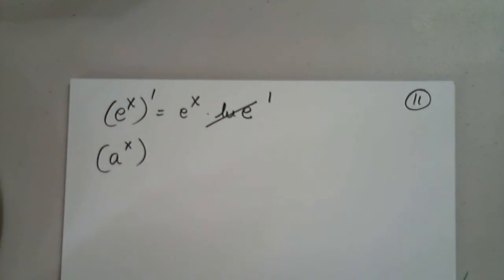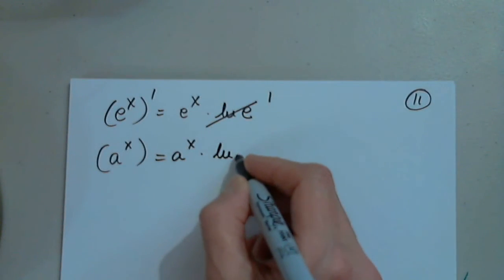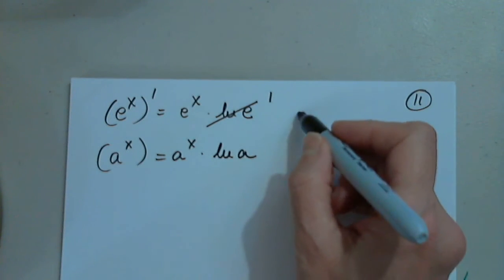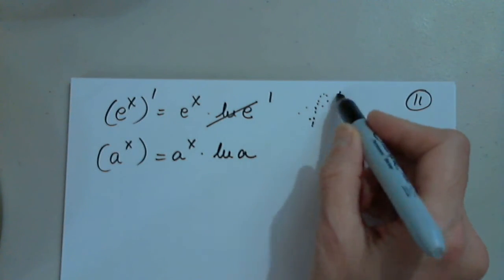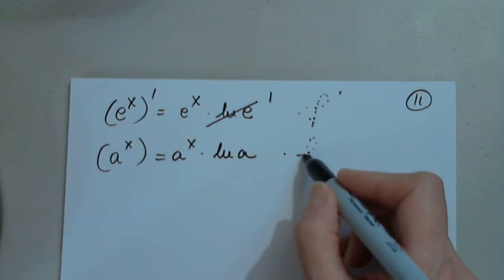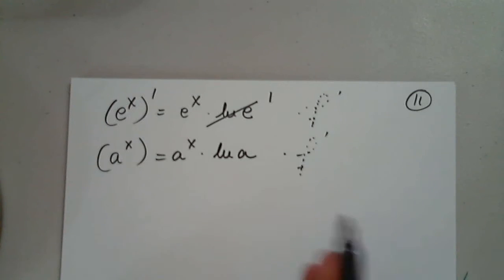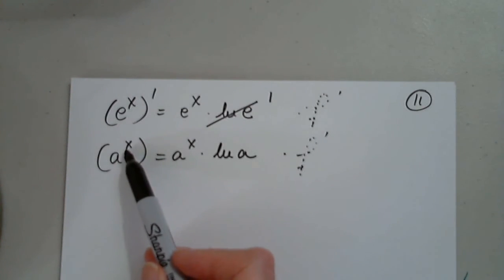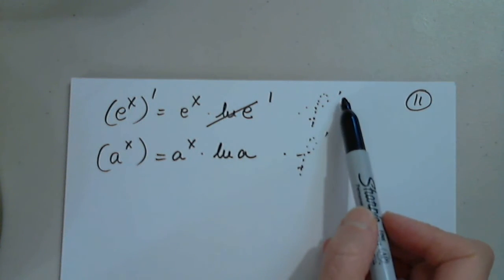When we differentiate a to the x, we have a to x times natural log of a. Of course, if it's a function, I also need to multiply by the function prime. If I have plain x there is no chain rule needed, but if this is a function, then the function prime must be included.